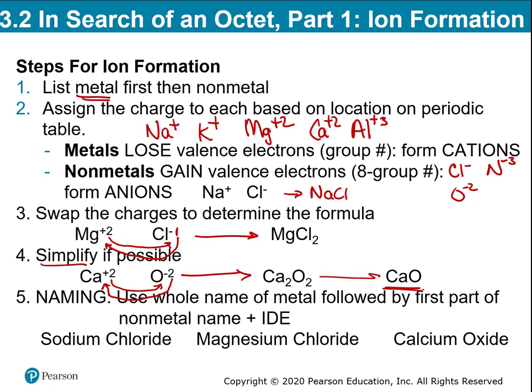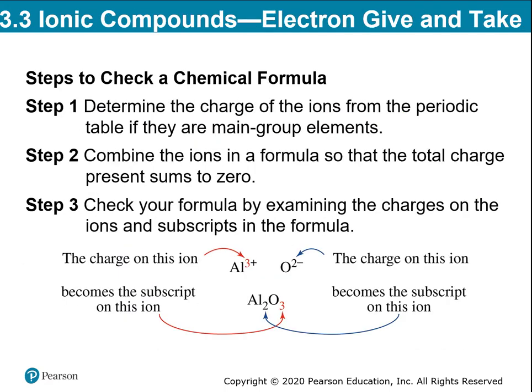In Al₂O₃ there are 2 aluminums, each with a +3 charge, giving a total of +6. There are 3 oxygens, each with a −2 charge, giving a total of −6. So the total positive and negative charges are equal — ionic compounds are chemically neutral. They have positive and negative ions that exist in a ratio that balances each other. That's why you do the swapping — to find the correct ratio. The charge on the metal tells you how many nonmetals, and the charge on the nonmetal tells you how many metals.